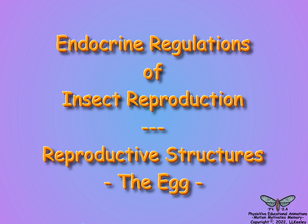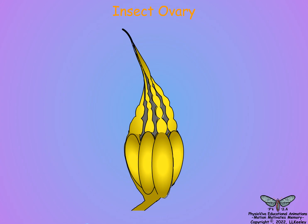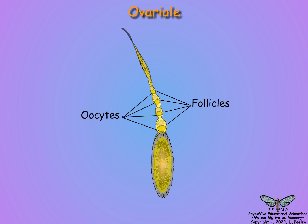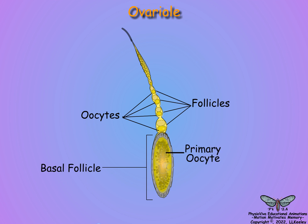This scene will demonstrate the formation and structure of an insect egg. Here is the insect ovary. The ovary is composed of ovarioles with follicles that contain progressively developing oocytes. The basal follicle contains the primary oocyte that becomes the egg.